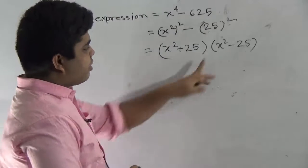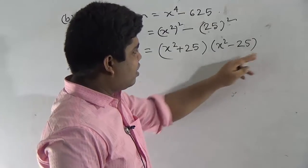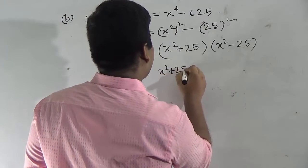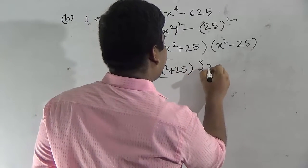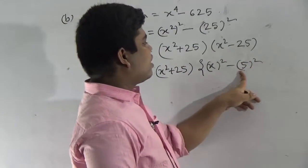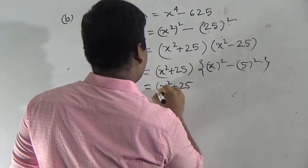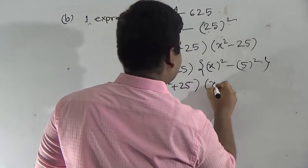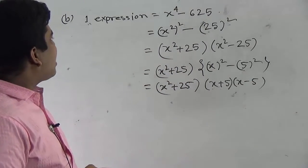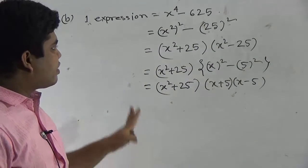Here, notice x squared minus 25 — the A squared minus B squared formula is also applicable again, since 5 is the square root of 25. So we write x squared minus 5 squared and apply the formula: (x plus 5)(x minus 5). So the full factorization of the first expression is (x squared plus 25)(x plus 5)(x minus 5). I hope you understood how to convert the first expression into factors.